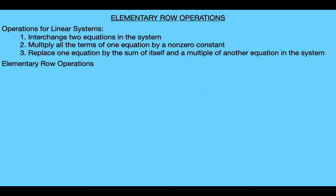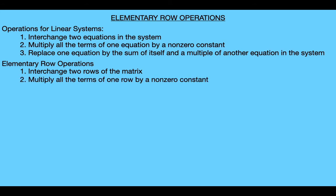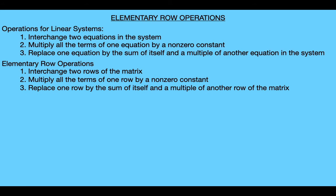So for the first operation, instead of interchanging two equations in the system, the first row operation should allow us to interchange two rows of the matrix. Similarly, for the second row operation, instead of multiplying all the terms of one equation by a non-zero constant, the second row operation should say that we can multiply all the terms of one row by a non-zero constant. And then finally for the third row operation, instead of replacing one equation by the sum of itself and a multiple of another equation, our row operation should say that we can replace one row by the sum of itself and a multiple of another row of the matrix. So these are our three elementary row operations, and they can be applied to any matrix, but for now we're only interested in applying them to the augmented matrix of a linear system.